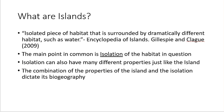So first of all, what are islands? We got a definition from the Encyclopedia of Islands by Gillespie and Clark 2009, and they define an island as an isolated piece of habitat that is surrounded by dramatically different habitat, such as water. The main point of that definition is that the habitat which forms the island is isolated from other similar habitat by a completely different type of habitat.